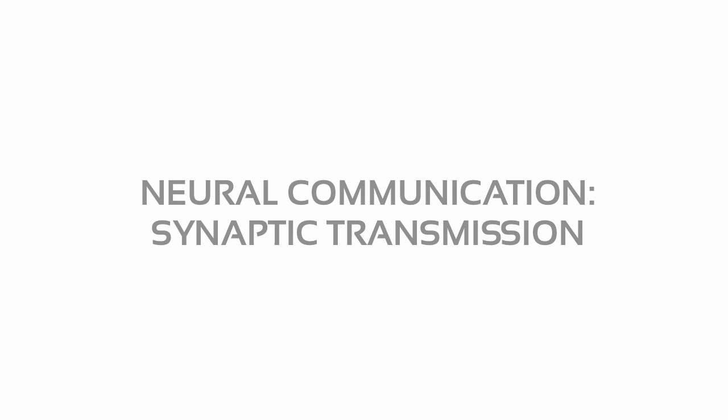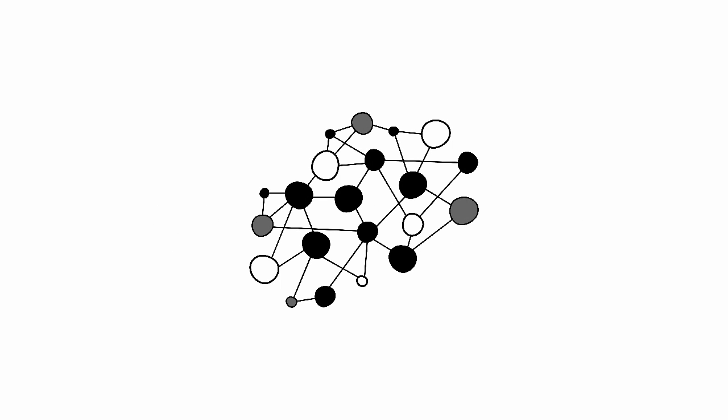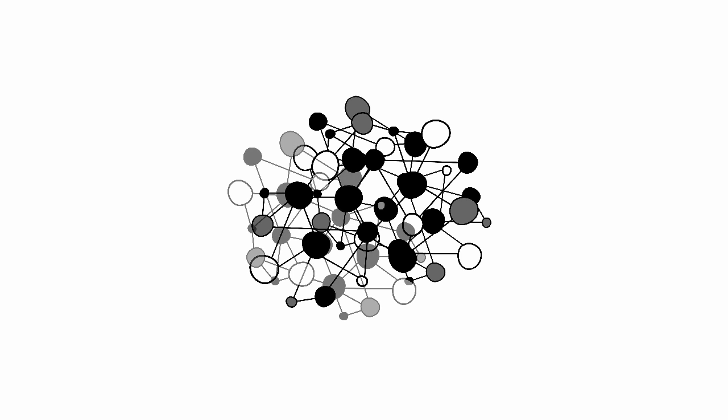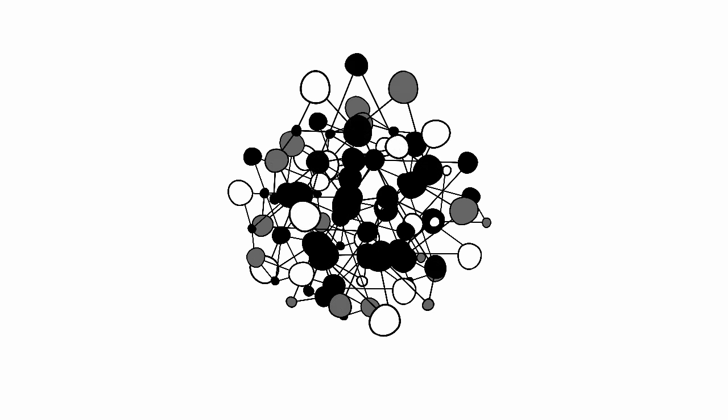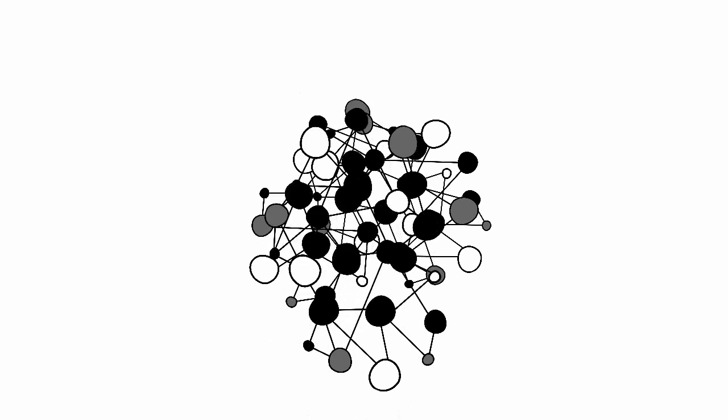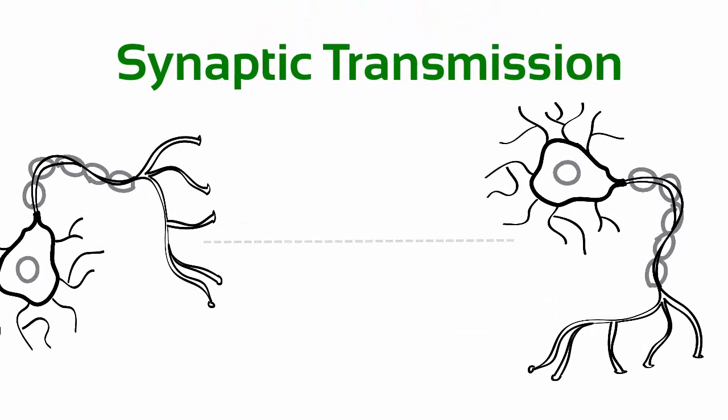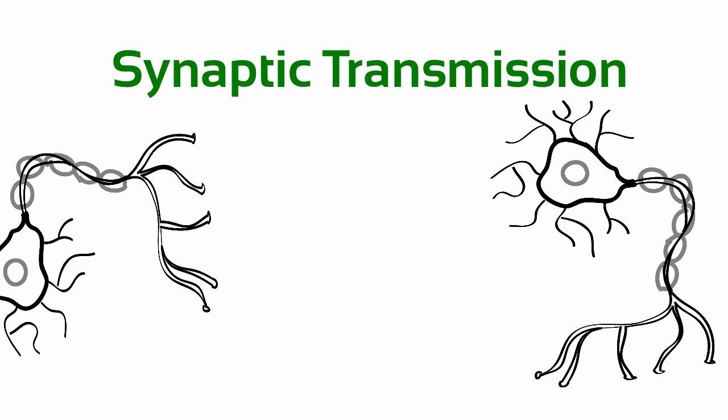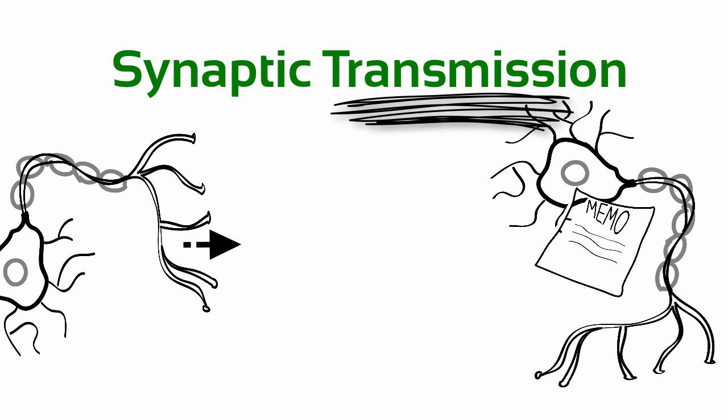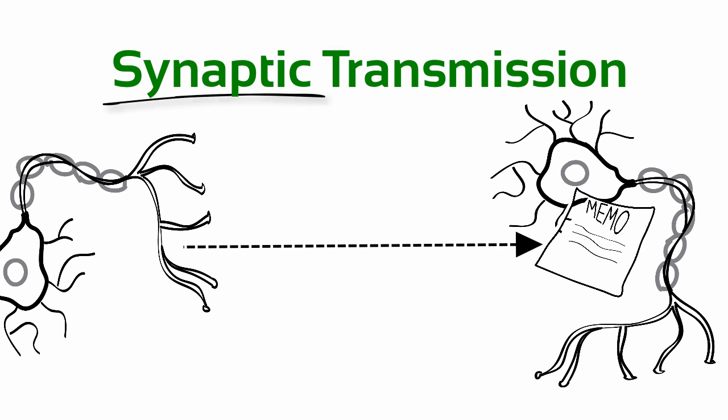Considering that any given cell might have 1,500 synapses with other cells, the reality of neural communication is rather complex. But we'll start with a single synapse where two cells communicate. The process of synaptic transmission is simply the conveyance of information across the space between cells. The transmission part is the conveyance of information. The synapse is the space between cells.